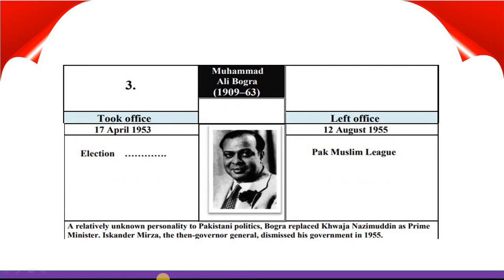Here is the third Prime Minister of Pakistan, Muhammad Ali Bogra. He took office 17th April 1953 and left office 12th August 1955. A relatively unknown personality of Pakistani politics, Bogra replaced Khawaja Nizamuddin as Prime Minister. Iskander Mirza, the Governor General, dismissed the government in 1955.